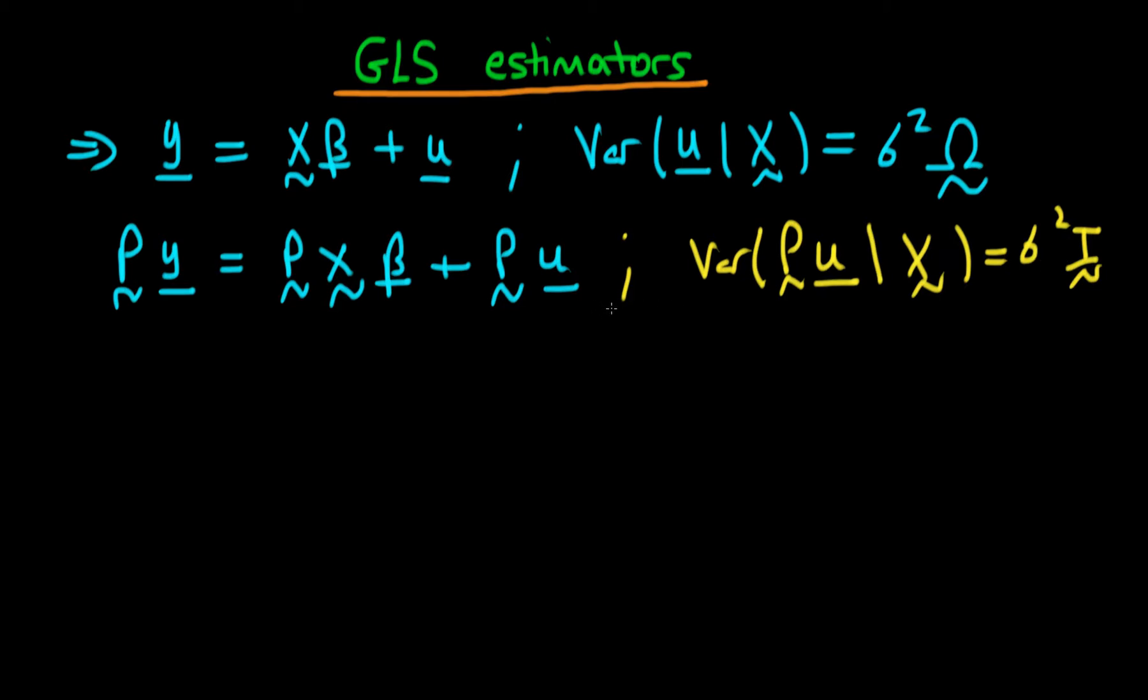So the idea is that our transformed system should actually have homoskedastic errors, and then we can actually just go ahead and estimate OLS on our transformed system. So GLS is really made up of two stages. The first is to transform the system using this matrix P, and the second stage is just to estimate OLS on the transformed system.